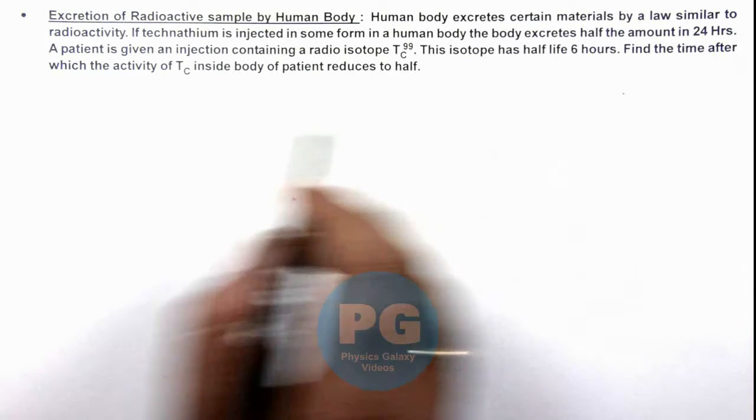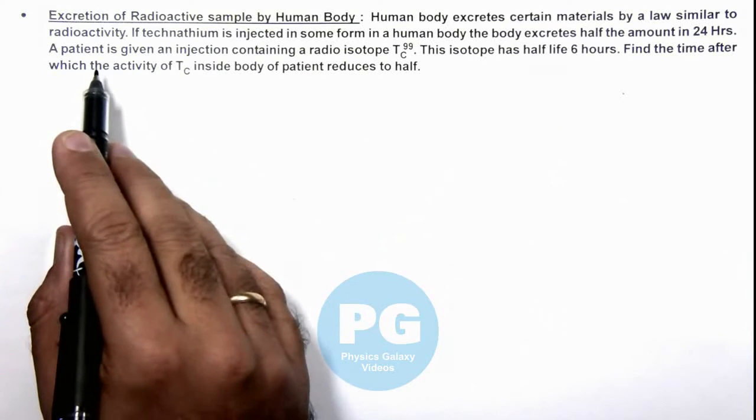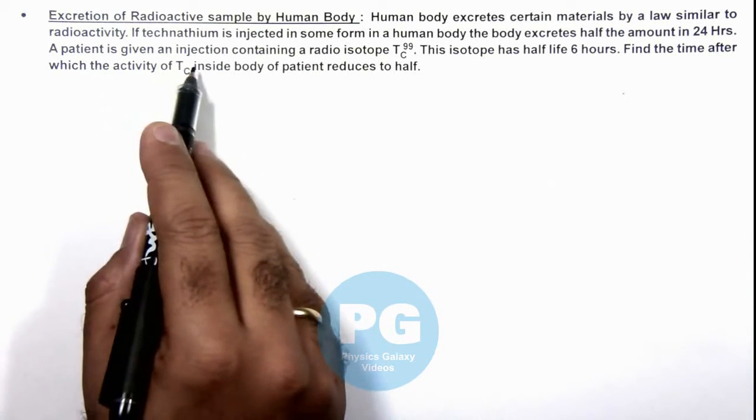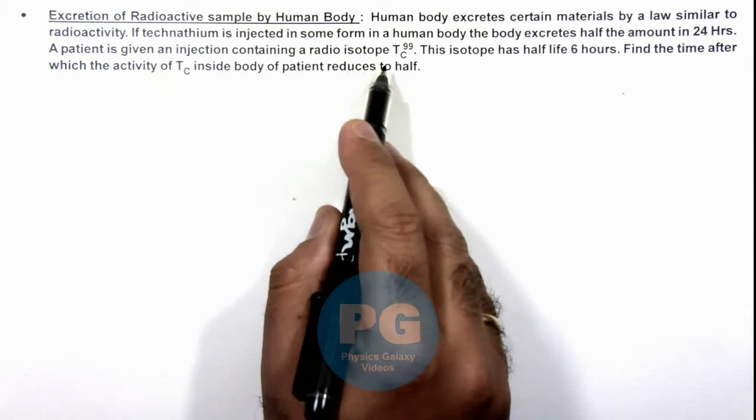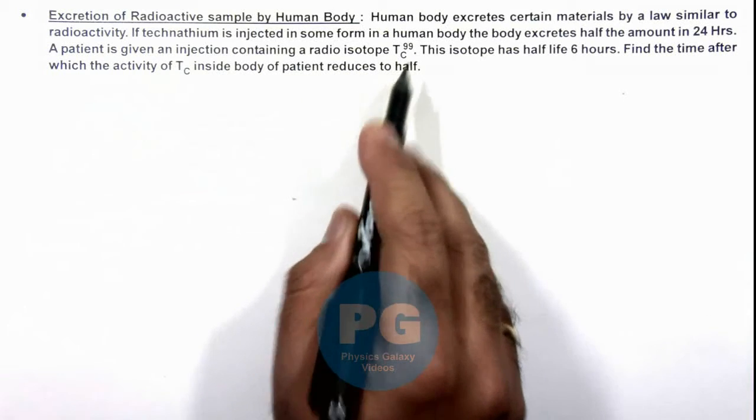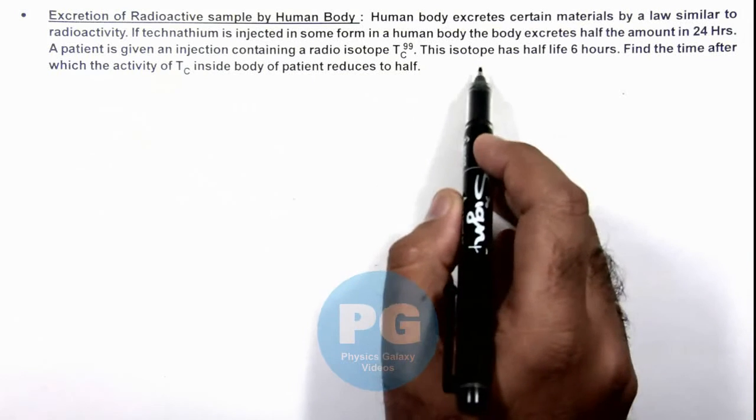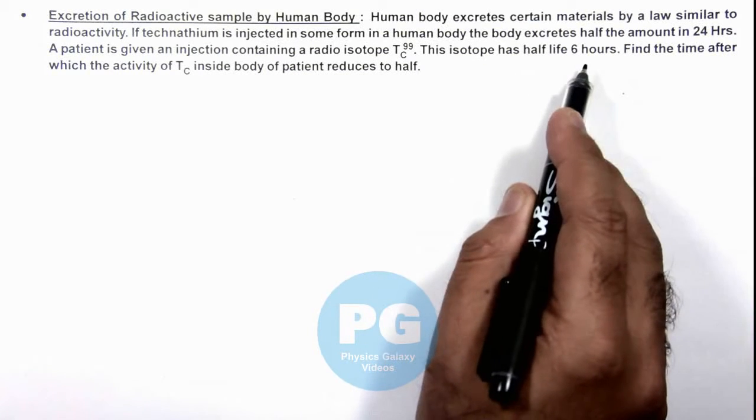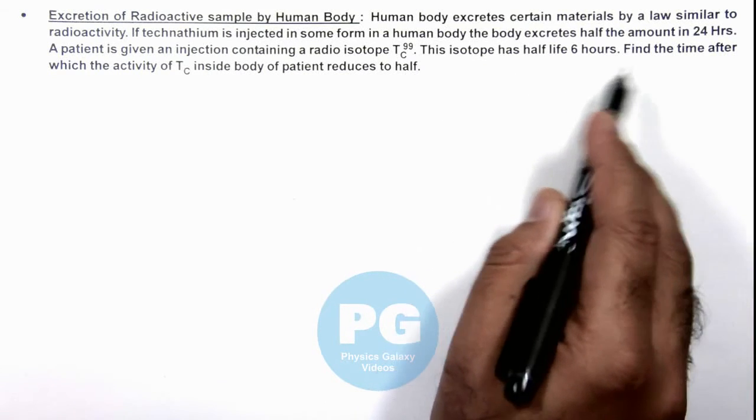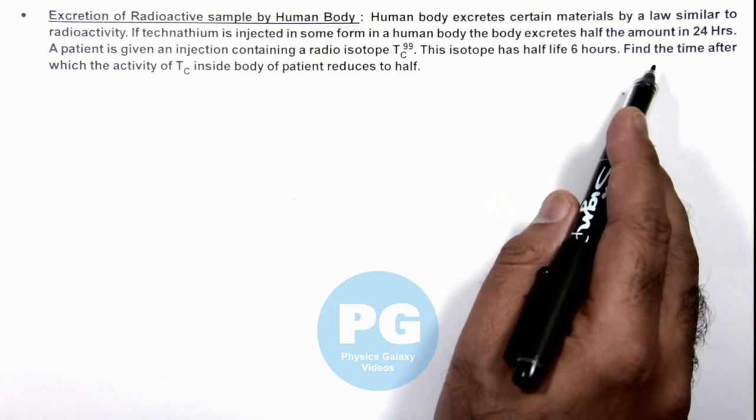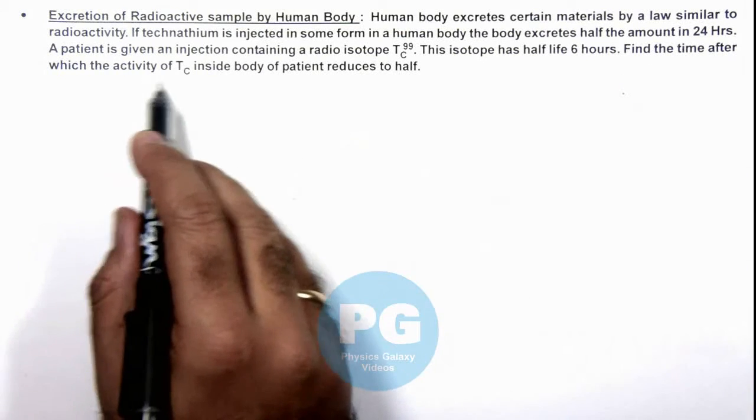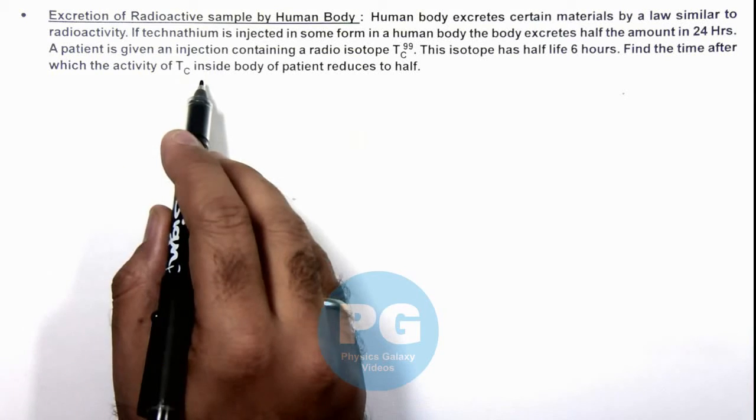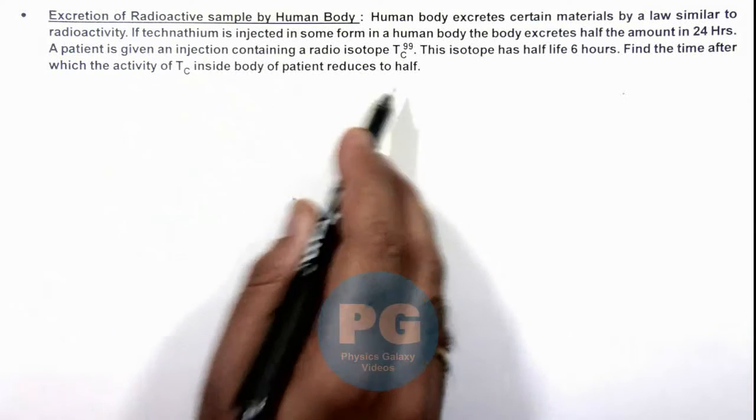In this situation we are given that a patient is given an injection containing a radioisotope TC-99. This isotope has a half-life of 6 hours. We are required to find the time after which the activity of this technetium inside body of patient reduces to half.